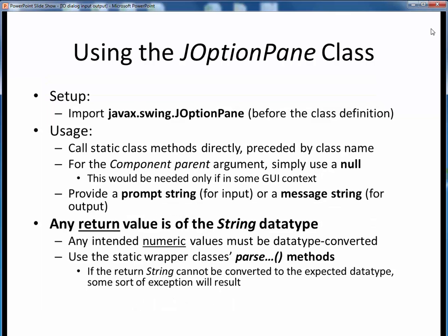Using the JOptionPane class to perform GUI input-output is pretty straightforward. Here's the checklist. First, we need to make it known to our program by performing the import before our program's class definition. Next, we call its static methods directly in our program preceded by the class name JOptionPane. For the first argument, we simply use null, and for the second argument, we provide either a prompt string for user input or a message string for user output. Remember that for input usage, any return value is of the string data type. If we need that return value to be of some numeric data type, we must convert it using the appropriate wrapper class and its associated parse method.